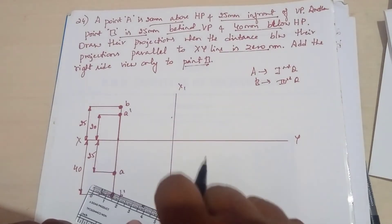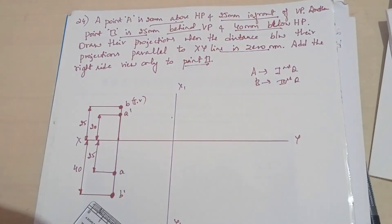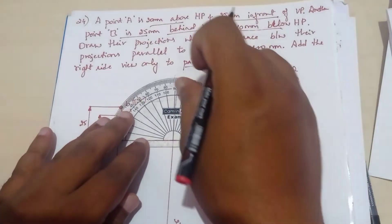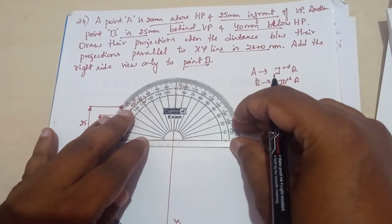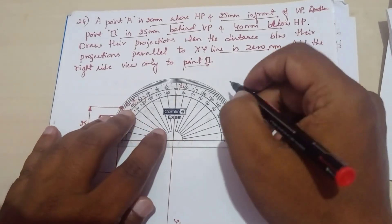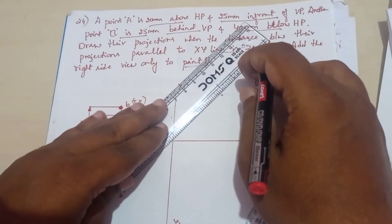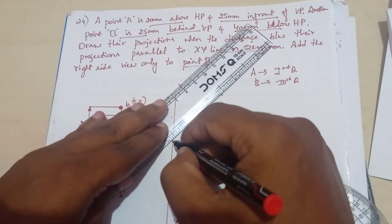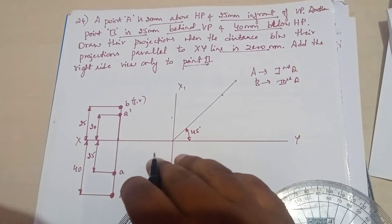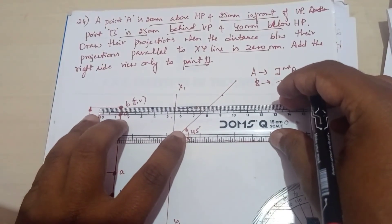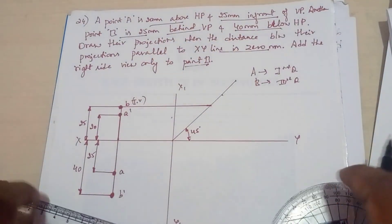You mentioned point B means here in the top view we exist above the XY line, means here the angle line we should construct here. 45 degree. So 45 degree top view, draw the projection line till here, then project it downward.